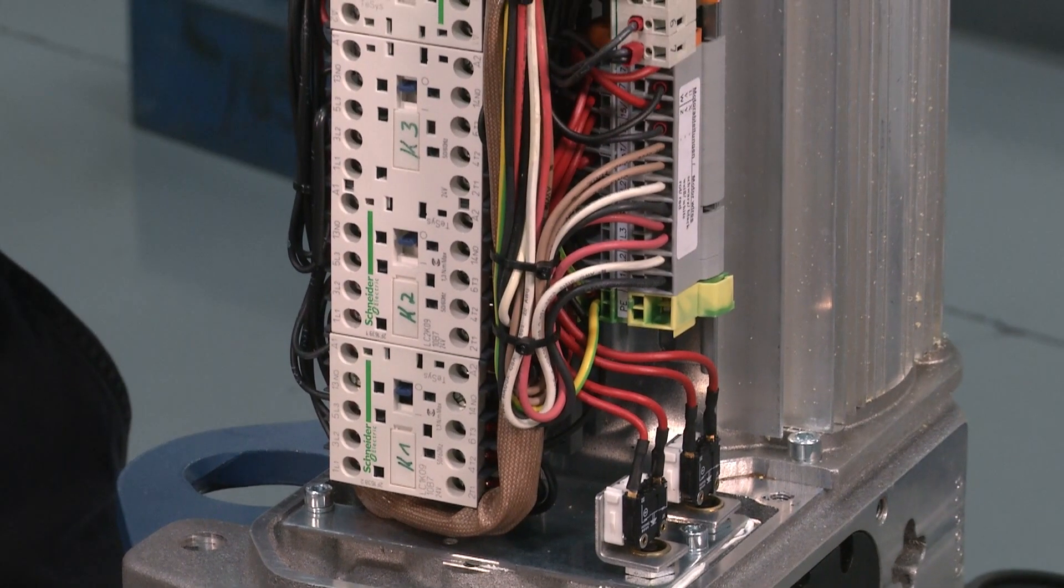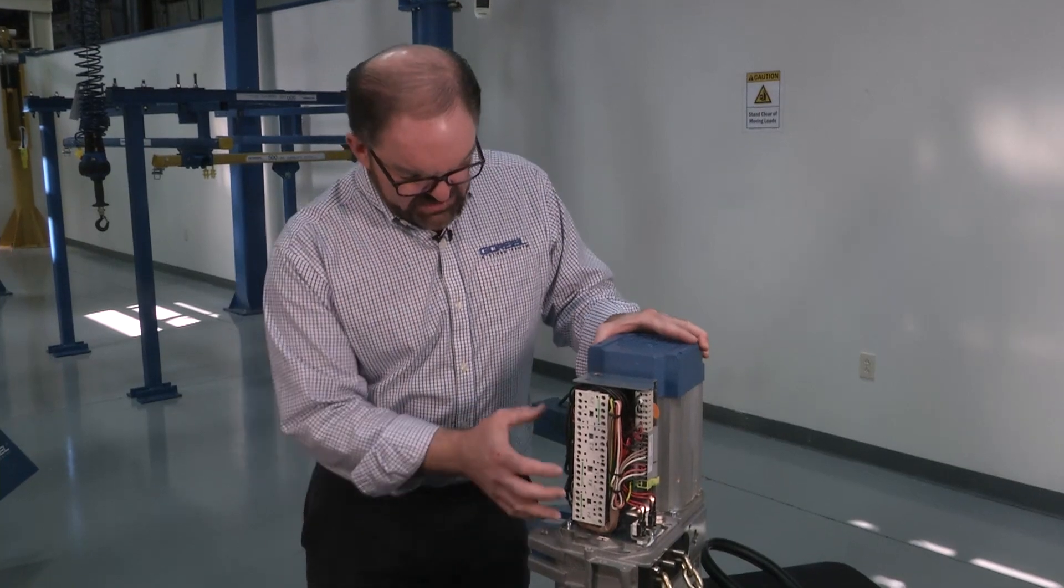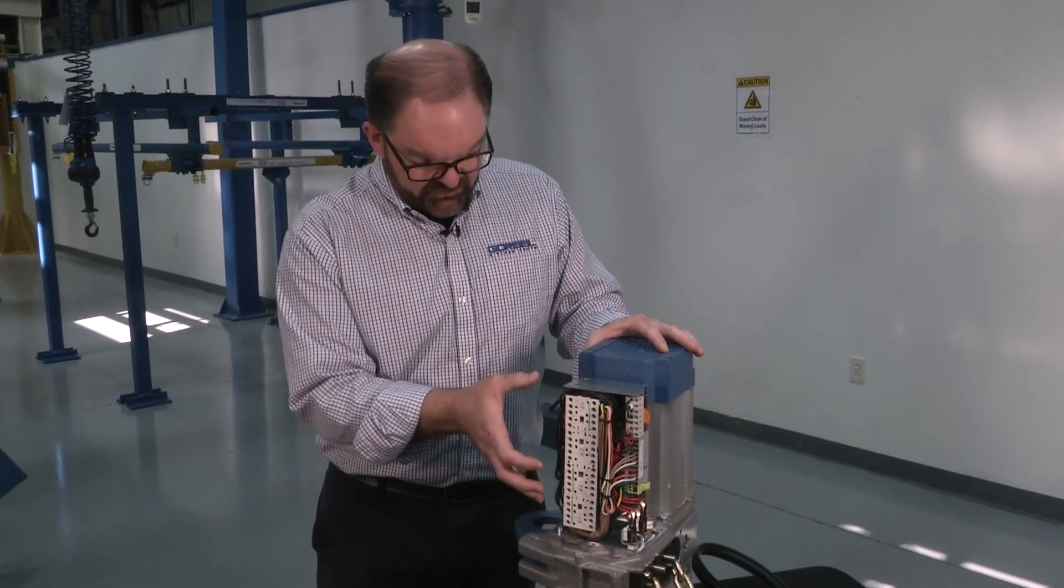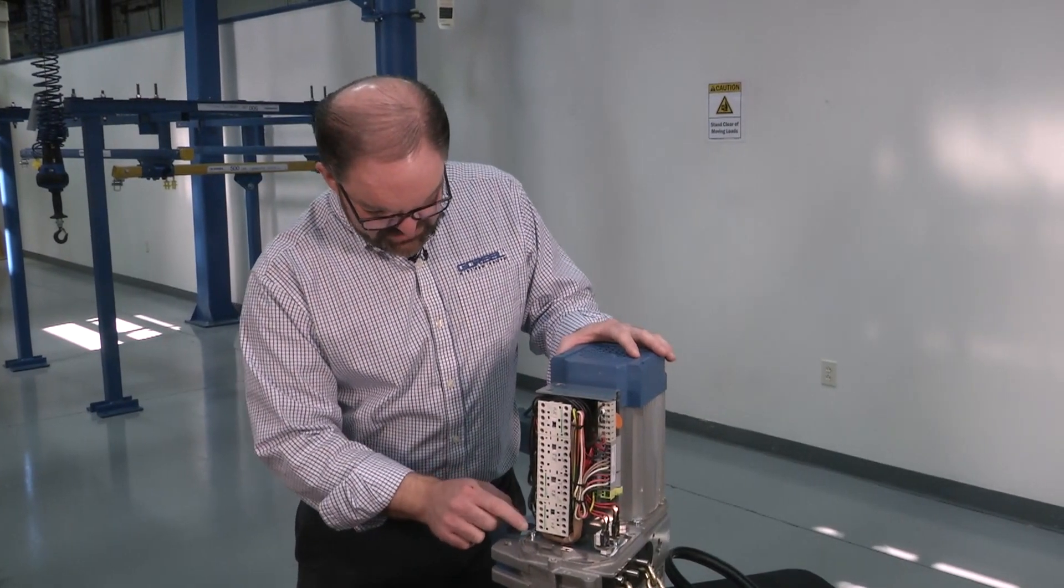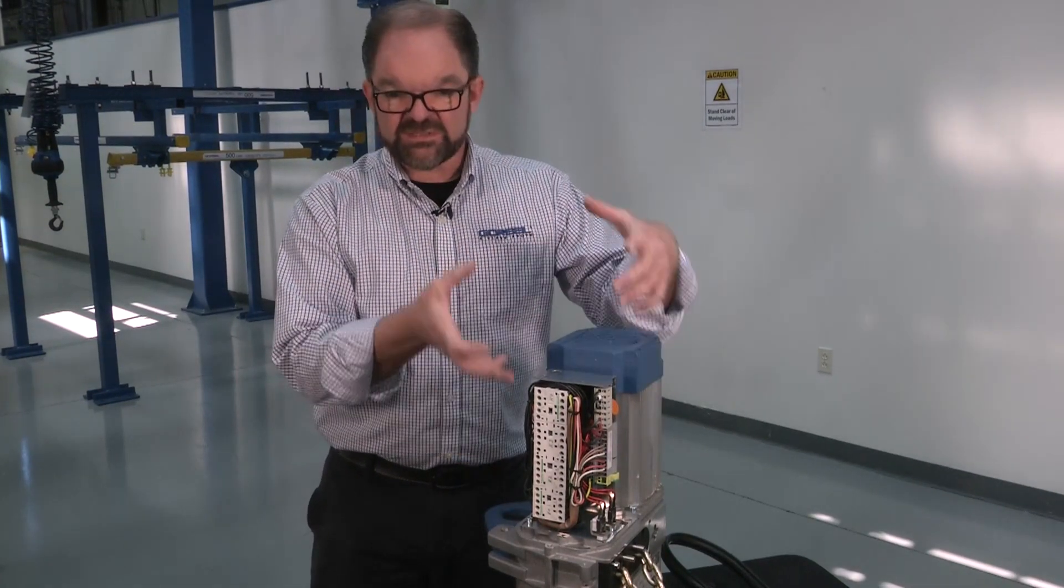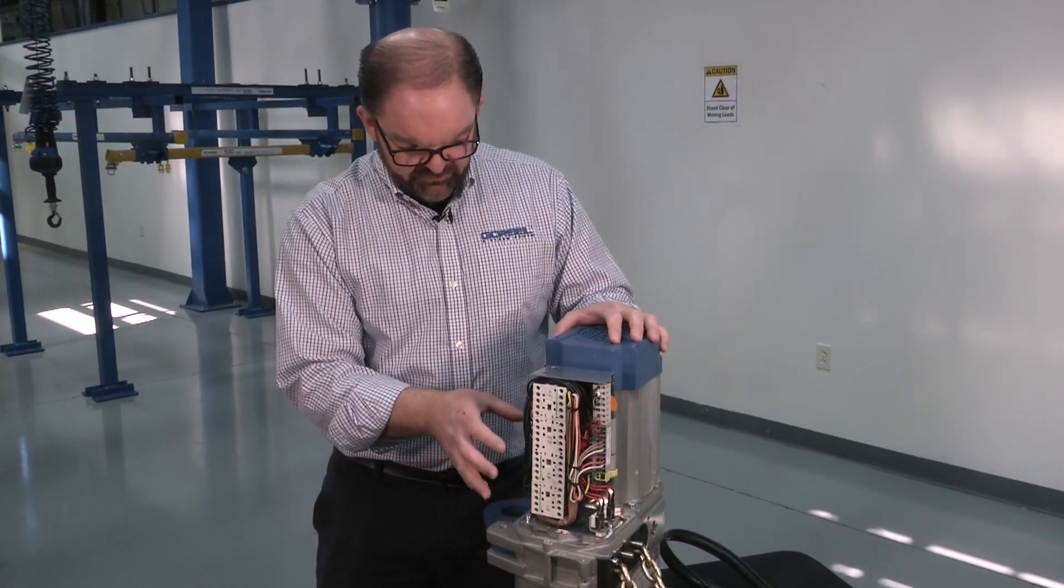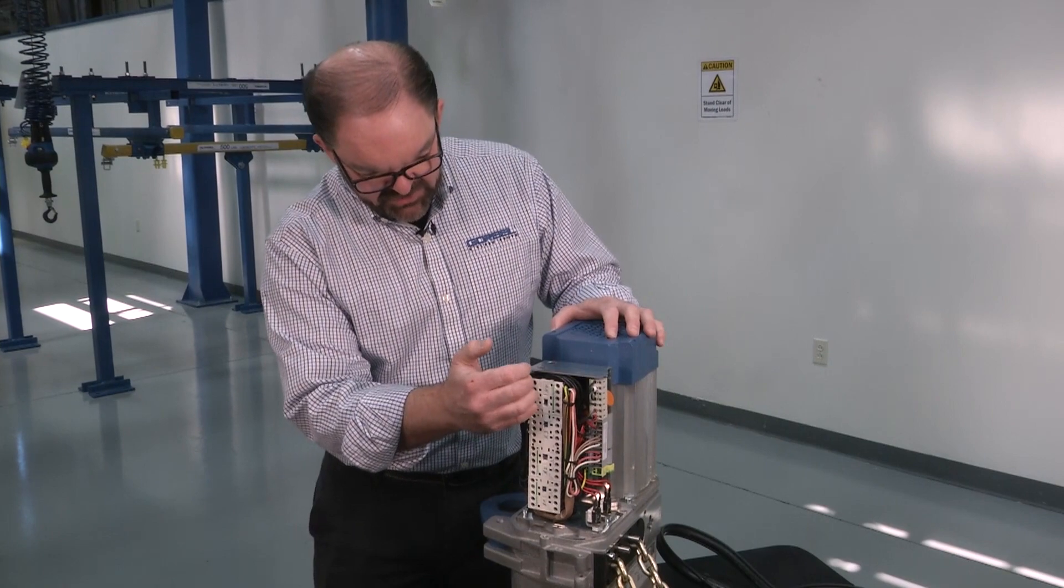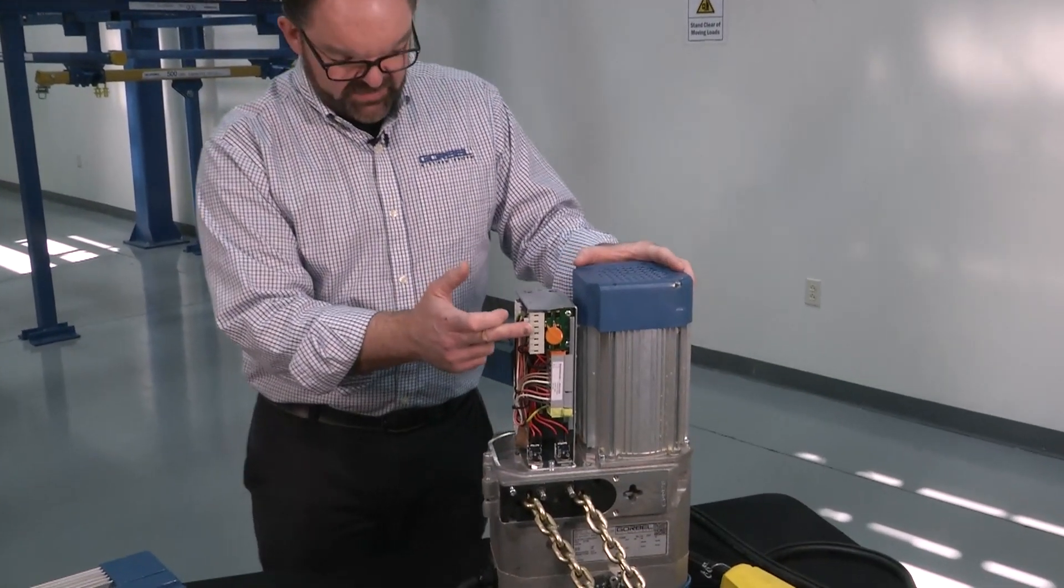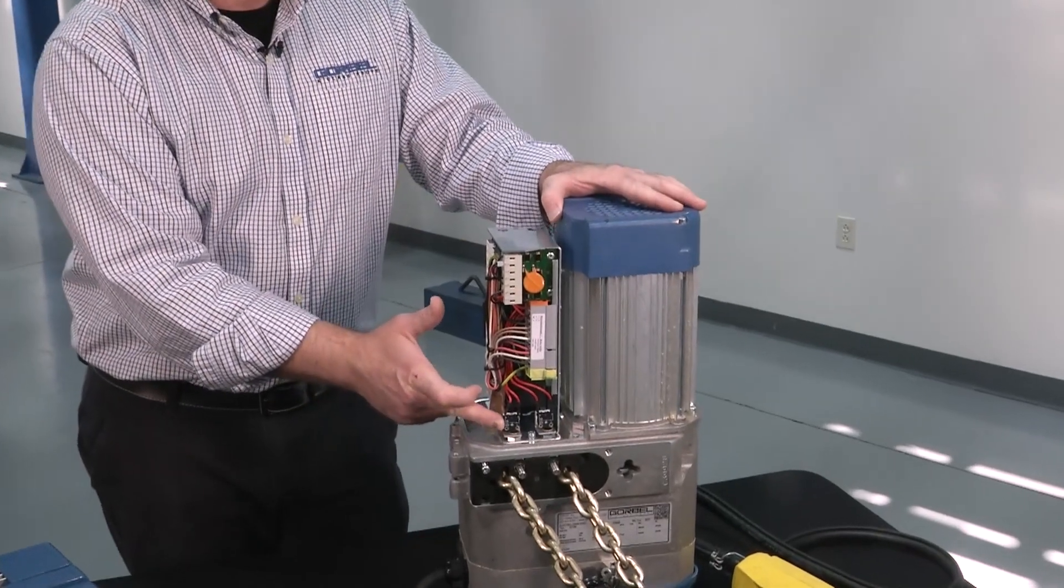So one thing you'll notice here is these contactors can be replaced individually if they ever need to be replaced. But also you'll see there's two pieces of hardware on either side of this module. You could actually replace this entire module in one fell swoop, and then you would replace all your contactors, your brake rectifier, and your limit switches all at one shot.